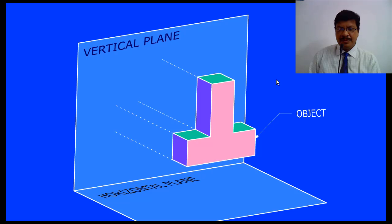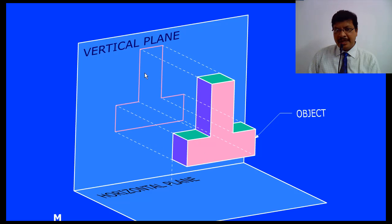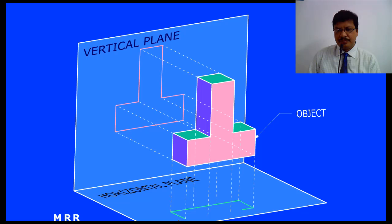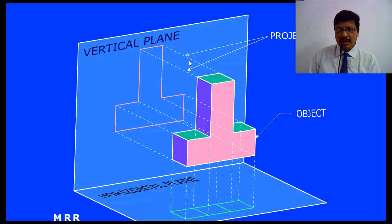Now observe how we are getting the orthographic projection. I am drawing lines onto the vertical plane, something like this. Now I am projecting these lines onto the horizontal plane. So these lines are called as projectors. The lines which are perpendicular to the plane of projection and parallel to each other are called as projectors.